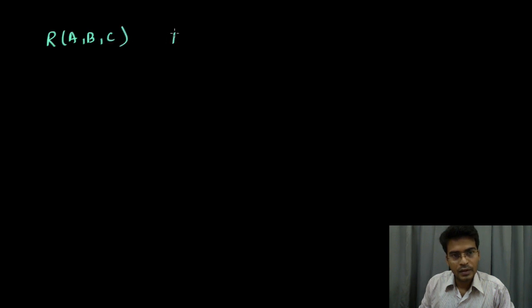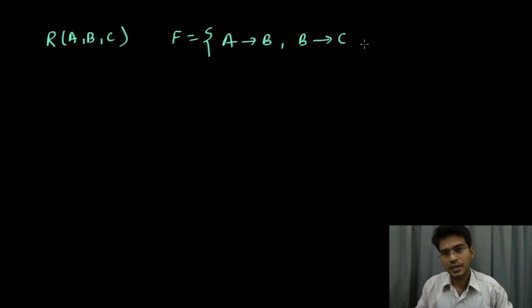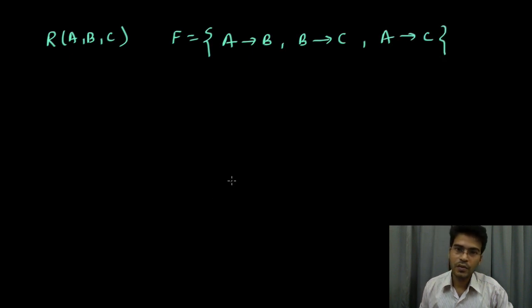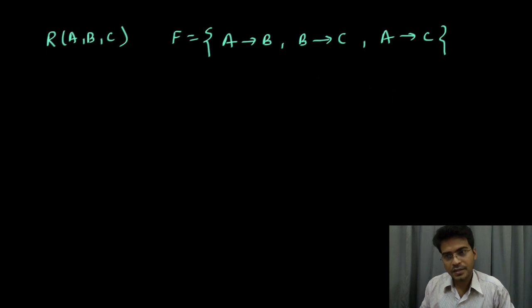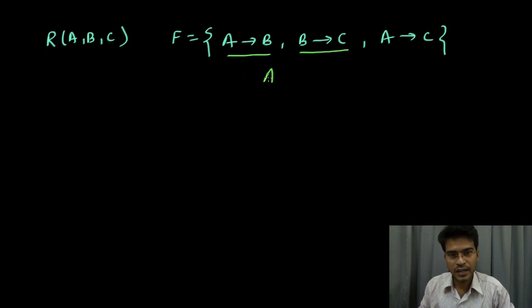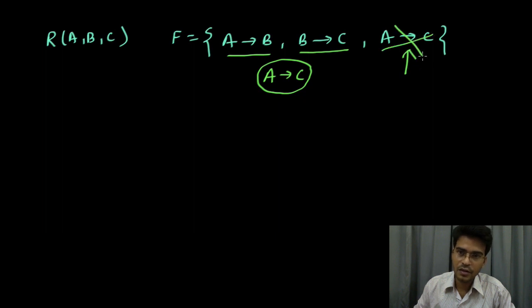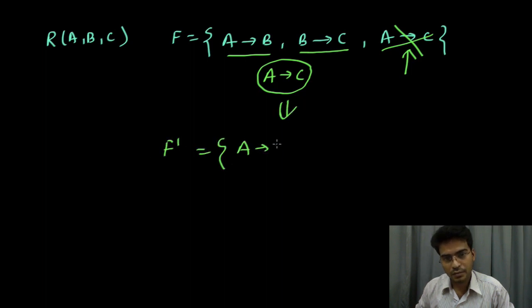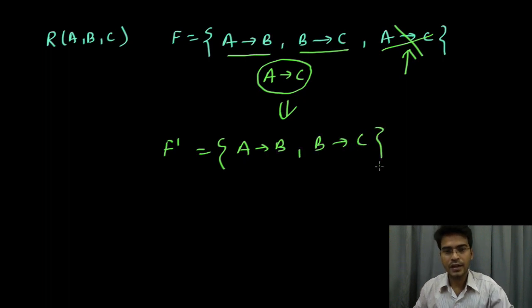Let us take another example. For the same relation r(a,b,c), let the given set of functional dependencies be: a determines b, b determines c, and a determines c. Here also something is redundant. From the transitive rule, since a determines b and b determines c, we can derive that a determines c — so we need not mention this functional dependency and should remove it. The reduced set f' will be: a determines b and b determines c. This is our canonical cover.